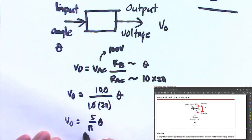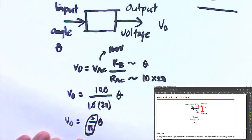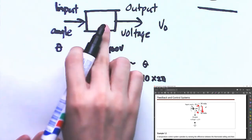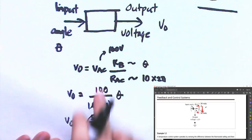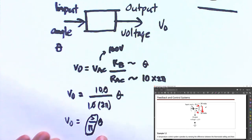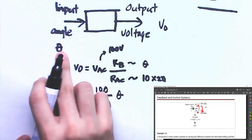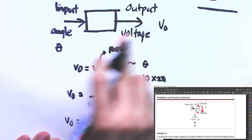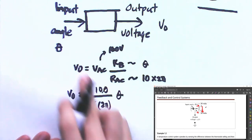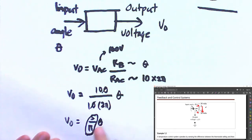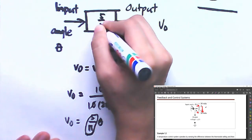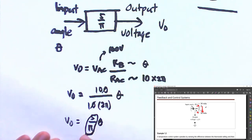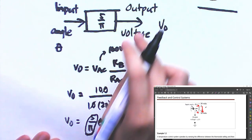This is the proportionality constant we are looking for. If theta is the input, to get the output you multiply it by 5/π.